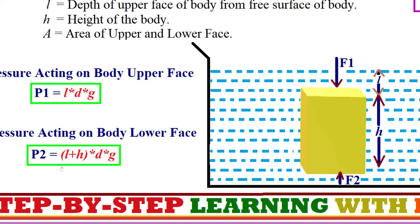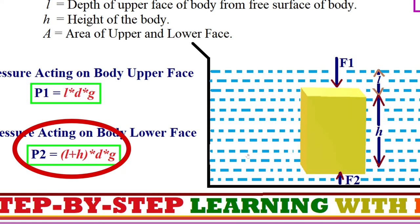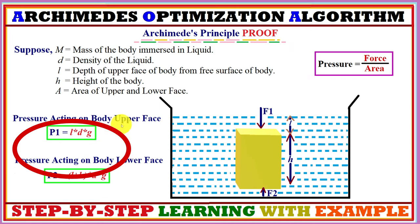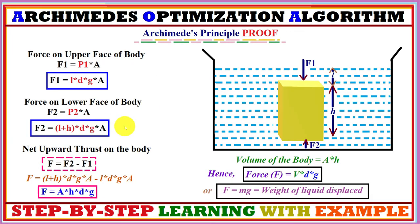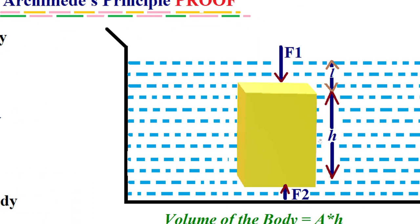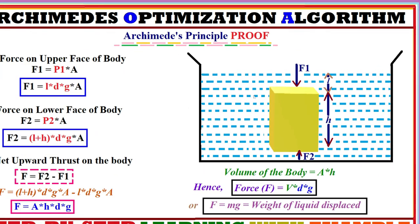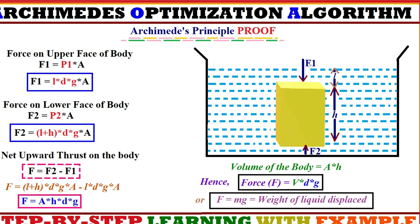The pressure on the lower face equals the depth of the upper face plus body height, multiplied by density and acceleration due to gravity — that is, p2 = (l + h) × d × g. The force acting on the body's upper face is denoted f1 and the force on the lower face is f2.